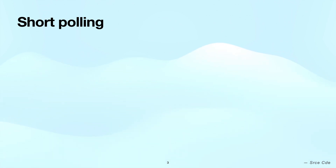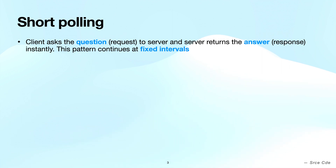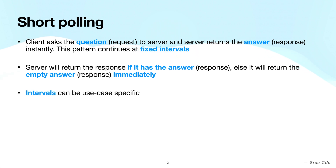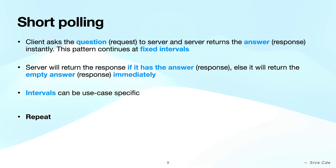Short polling is a technique to retrieve data from the server by making periodic requests at regular intervals. The client sends a request to the server for new data, and the server will return the data immediately if new data is available, or else it will immediately return an empty response. The interval depends on the use case — for example, if the polling interval is 5 seconds, the client makes a request every 5 seconds, and this request-response pattern continues in a repeating manner.